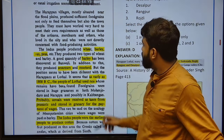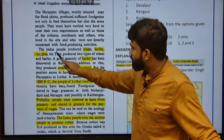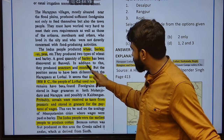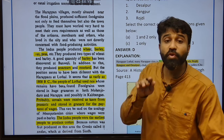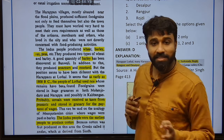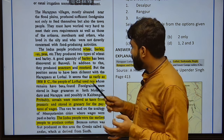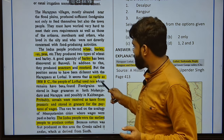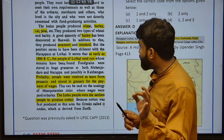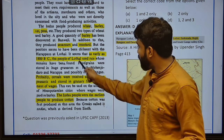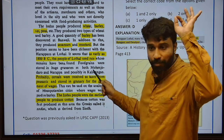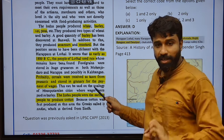Wheat, barley, peas, sesame, and mustard are also found in Harappan sites. As early as 1800 BC, people of Lothal used rice.